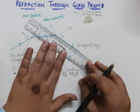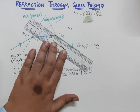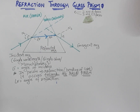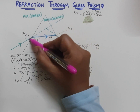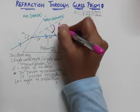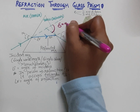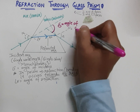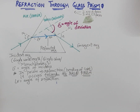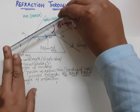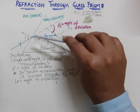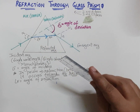We will extend this ray behind to find where it meets the incident ray. We can then make out the angle between the incident ray and the emergent ray. This angle is represented by the symbol delta and is known as the angle of deviation — because the original path of the ray has been displaced by this angle.